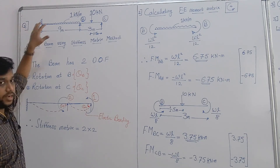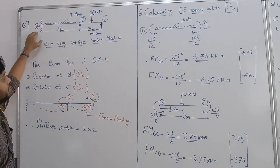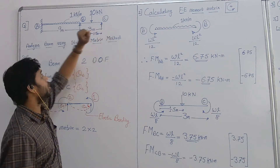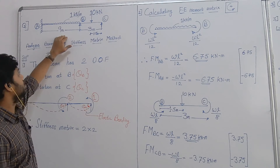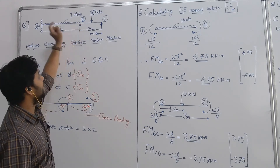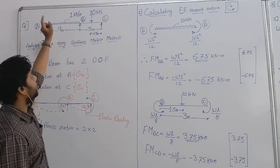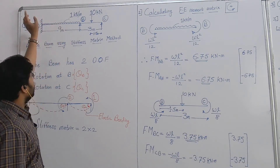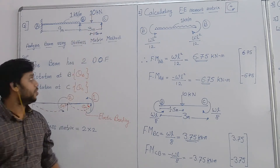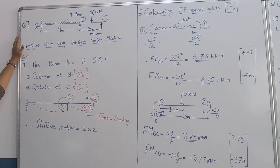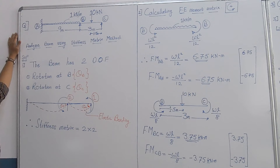Let us proceed towards the given problem. This is a continuous beam fixed at end A, continued along node B up to point C. The total span of the structure is 12 meters — 9 meters up to point D (node B) and 3 meters up to point C. Span AB is loaded with 1 kilonewton per meter UDL and span BC is loaded with a 10 kilonewton point load at midpoint. We need to calculate reactions at A, B and C using the stiffness matrix method.